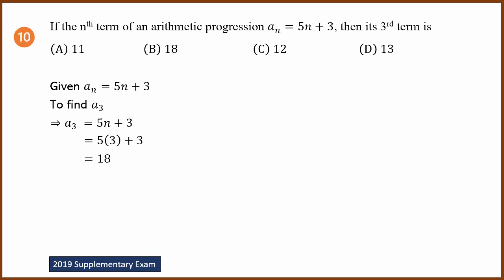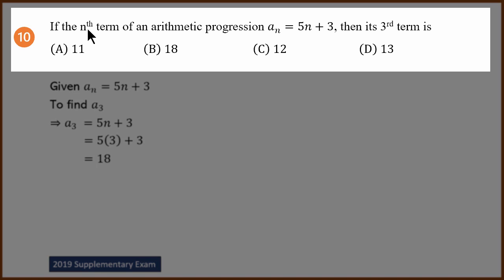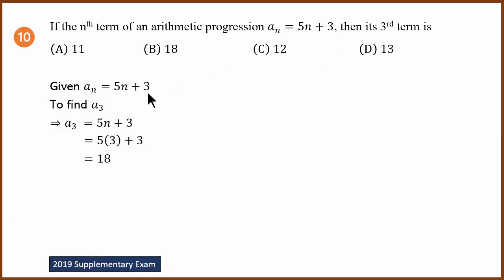Finally, the 10th question. This is from the 2019 supplementary exam. An is 5n plus 3. Find the third term. We know An is 5n plus 3. We have to find A3, which is 5 times 3 plus 3, equals 15 plus 3, equals 18. 18 is the answer.